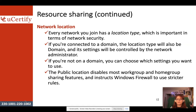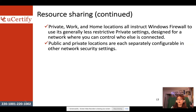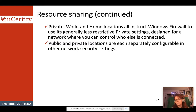The public location disables most workgroup and home group sharing features and uses stricter Windows Firewall rules, closing more ports. Private, work, and home locations — called 'private' in Windows 10 and 'work' or 'home' in Windows 7/8/8.1 — tell Windows Firewall to use less restrictive settings, opening more ports and enabling more sharing features. Public and private locations are separately configurable in the network security settings in the Control Panel.